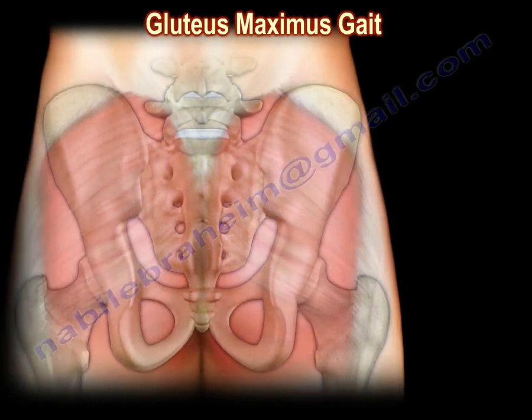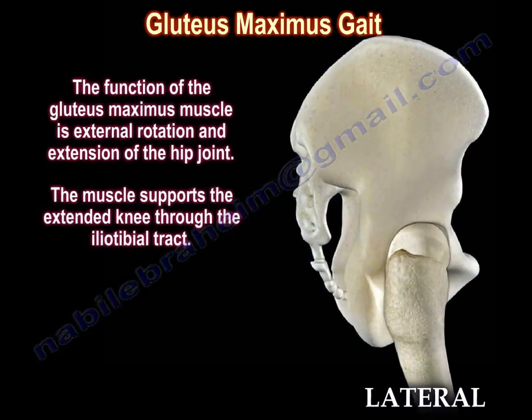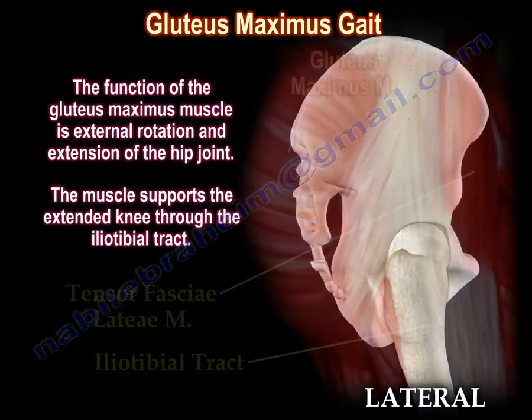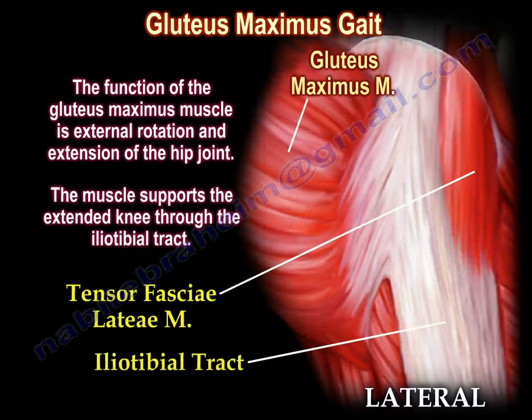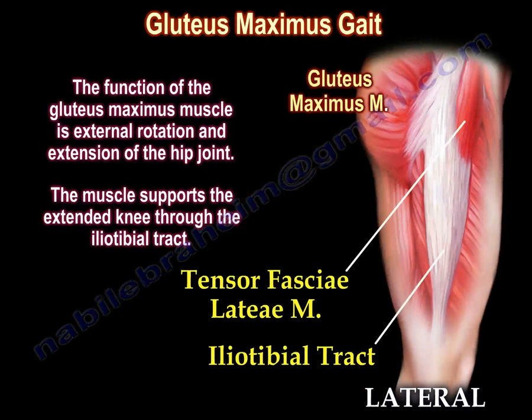The function of the gluteus maximus muscle is external rotation and extension of the hip joint. The muscle supports the extended knee through the iliotibial tract. Here you can see the position of the tensor fascia lata muscle and the iliotibial tract in relationship to the gluteus maximus muscle.